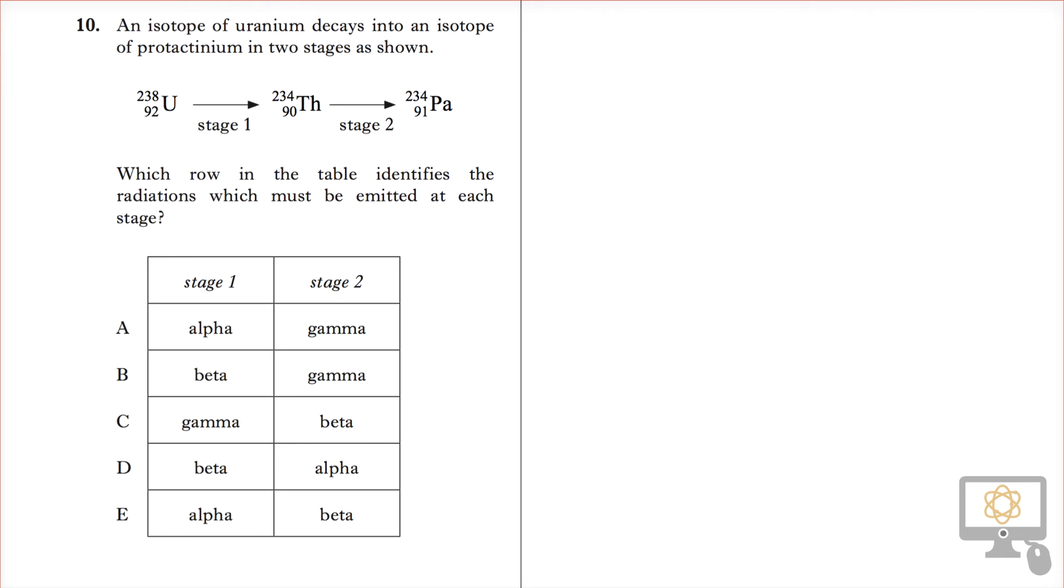Let's look at question 10 from the 2014 revised Higher physics paper. It says an isotope of uranium decays into an isotope of protactinium in two stages as shown.